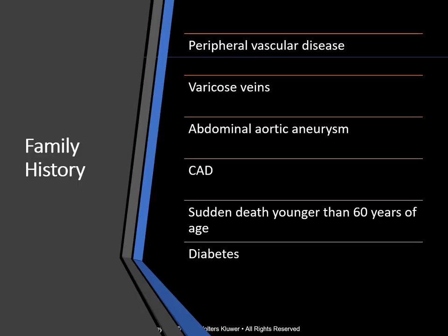Potential family risk factors may include relatives with a history of peripheral vascular disease or peripheral artery disease, varicose veins, abdominal aortic aneurysm, also known as a triple A. You could possibly hear a bruit when listening to the abdomen, but we will talk more about this later. A history of coronary artery disease, sudden cardiac death less than age 60, and diabetes.